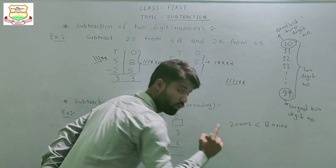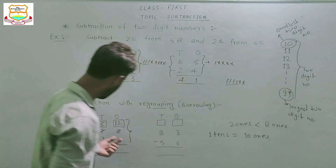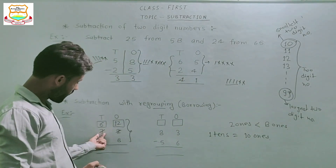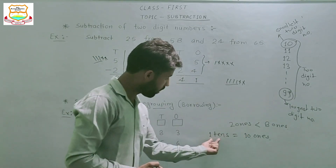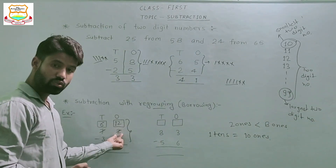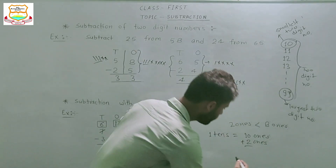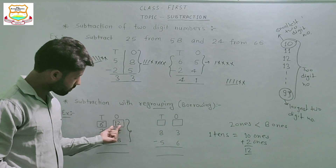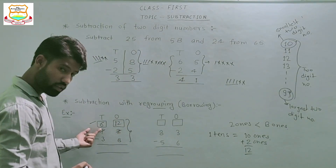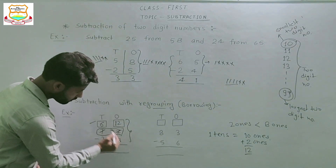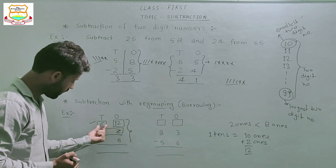We have 1 ten here, and 1 ten equals 10 ones. So we place 10 ones in the ones column. We already have 2 ones, so 10 ones plus 2 ones equals 12 ones. Now subtract: 12 minus 8 and 6 minus 3.